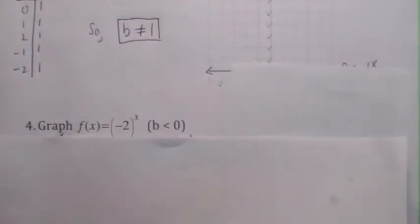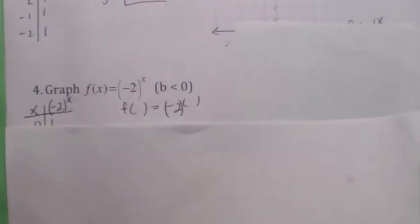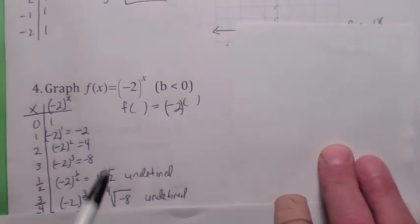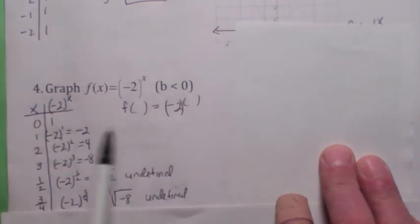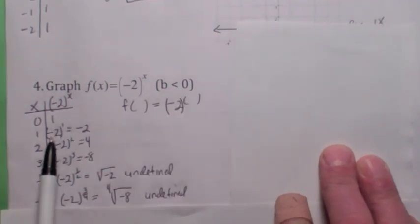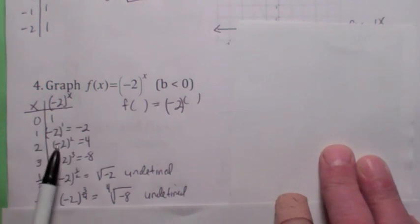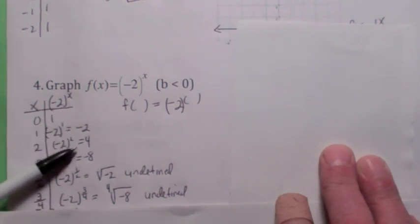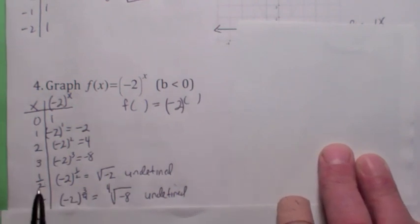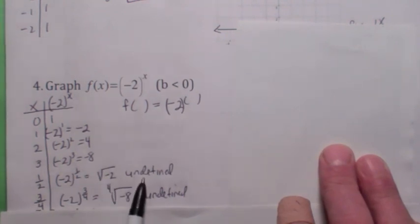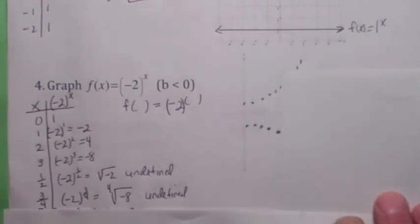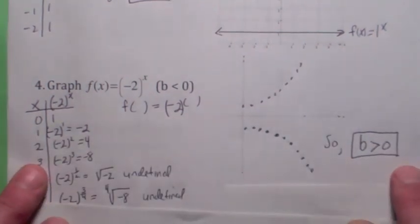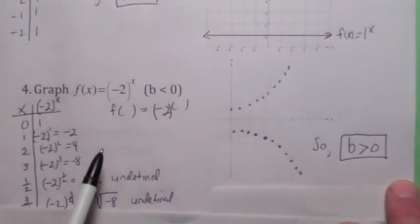When you have a base that's negative, we don't allow that either. Here's why: if you make a table for negative 2 to the x — where the base is negative 2 — f of 0 is negative 2 to the 0 power, which is 1; f of 1 is negative 2 to the 1, which is negative 2, and so on. The y values alternate from positive to negative. But it's actually worse than that, because when you plug in 1 half, negative 2 to the 1 half power is the square root of negative 2, which is undefined. Whenever you have an exponent with an even denominator, it's going to be undefined. So the graph looks really weird, and we don't allow a negative base.